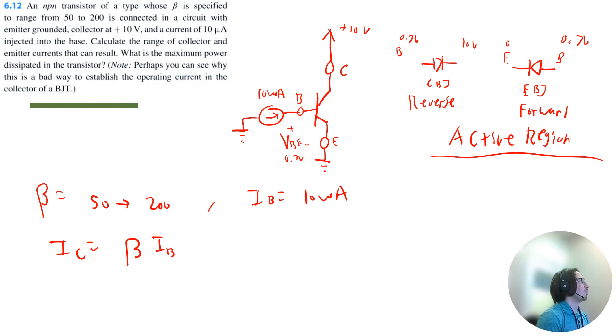So if we do 50 times 10 microamps, it'll go up to 200 times 10 microamps. So I get that the collector current is going to range from 0.5 milliamps to 2 milliamps.